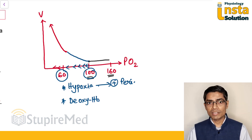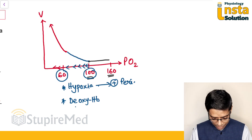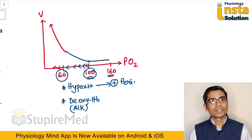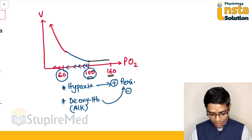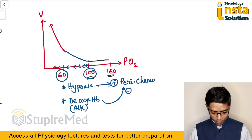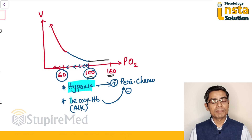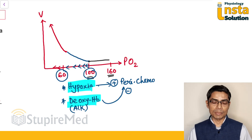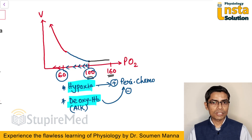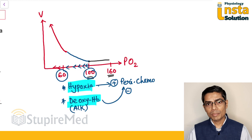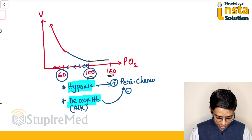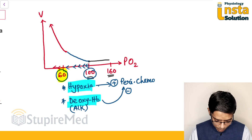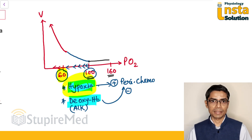Deoxyhemoglobin is a less strong acid compared to oxyhemoglobin — so it acts like a relative alkali. Alkalinity has a suppression or inhibition effect on the peripheral chemoreceptors. So hypoxia is stimulating and deoxyhemoglobin is inhibiting the peripheral chemoreceptors. Because of this balance, ventilation does not rise significantly when the partial pressure of oxygen is above 60 mmHg.